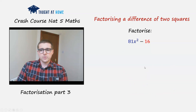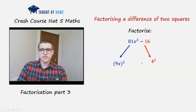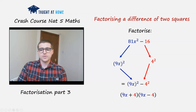Now we've got a coefficient in front of the x squared. We can say 81x squared is (9x) all squared, and 16 is 4 squared. So we can still write this as a difference of two squares: (9x) squared minus (4) squared. Fully factorised, that would be (9x + 4) times (9x - 4).